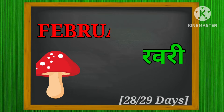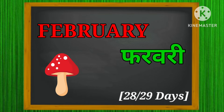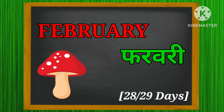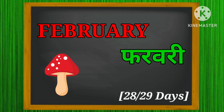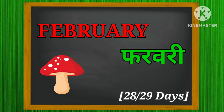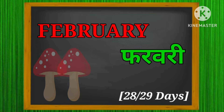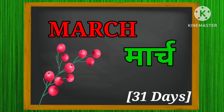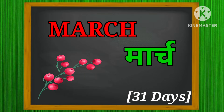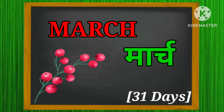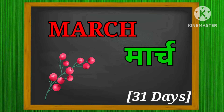January — there are 31 days in the month of January. February — there are 28 or 29 days in the month of February. March — there are 31 days in the month of March.